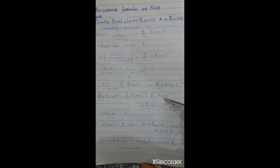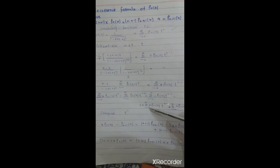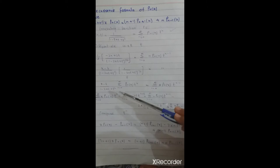This equals summation n·Pn(x)·tⁿ minus 2x times summation n·Pn(x)·tⁿ plus summation n·Pn(x)·tⁿ⁺¹. Now compare the coefficient of tⁿ. Here we have tⁿ⁺¹, here tⁿ⁻¹, and here tⁿ⁺¹.